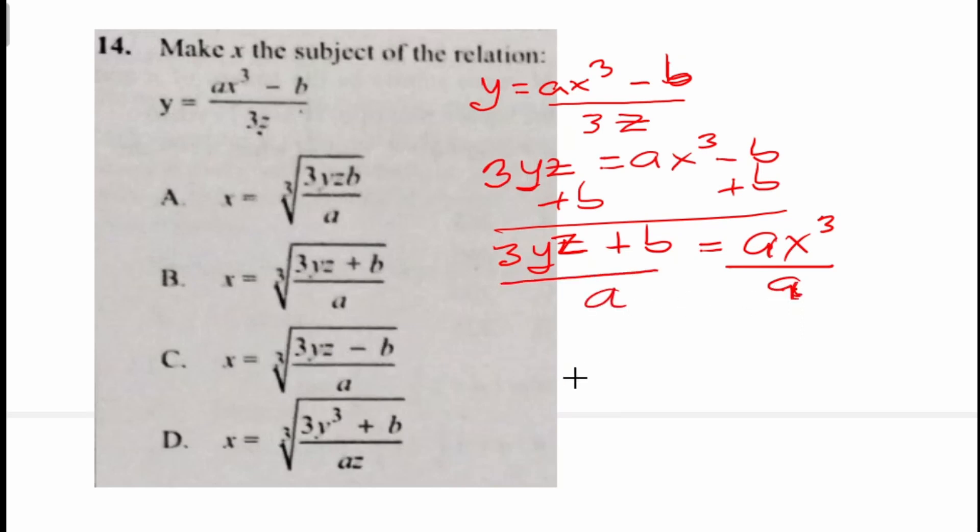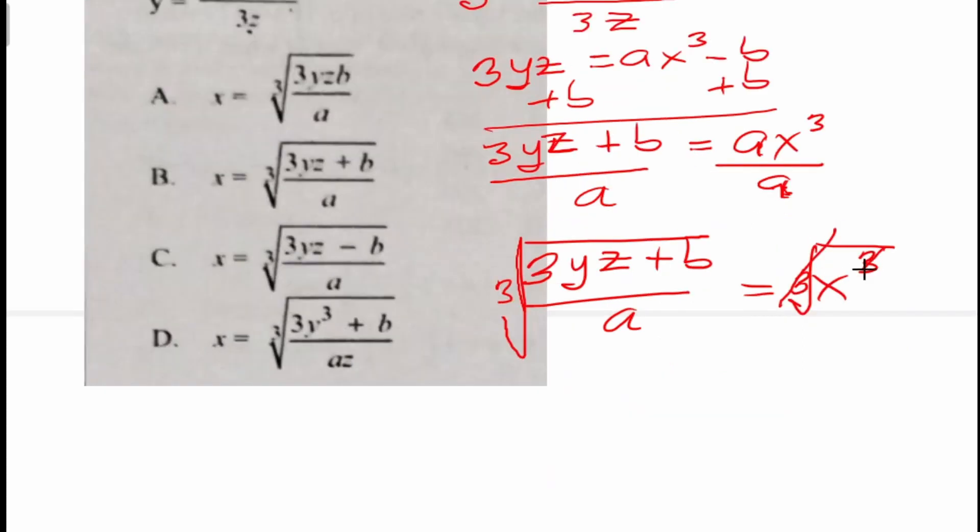How do we get rid of the cube? Because we are solving for x. Yeah, I'm sure you are telling me we take the cube root. So let's take the cube root of this side, and whatever we do to the right do the same thing to the left. So cube root, so the cube root cancels the cube, and we're now going to have the cube root of 3yz plus b all over a, and that gives us x.